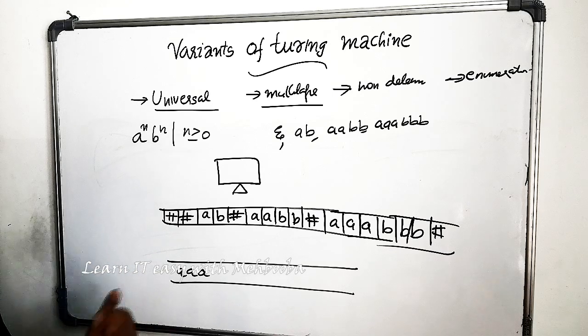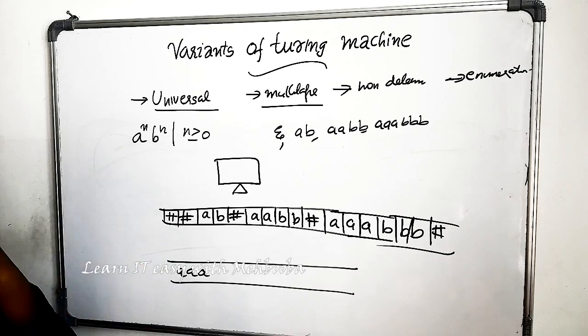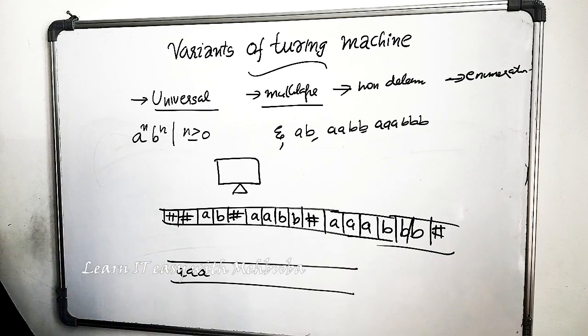This is how enumerator Turing machines work. These are the four different variants of Turing machine. Hope you understood. Thank you.